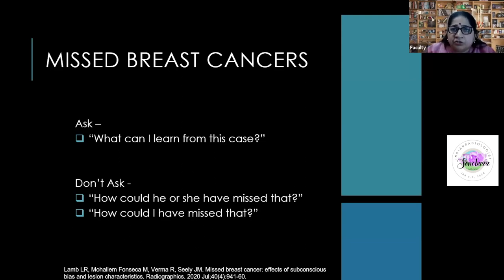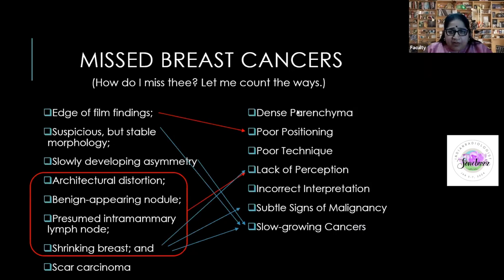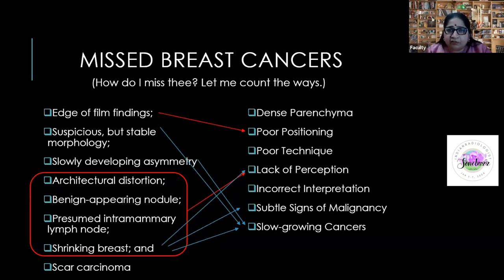This talk is about showing potential pitfalls — actual pits we've fallen into — and learning from them. There are innumerable ways of missing breast cancer. I divide them into three categories: technical factors such as poor positioning, poor technique, poor contrast, and dense parenchyma; the nature of the disease — very slow-growing disease or very subtle features like a little bit of architectural distortion or margins that are just slightly off.